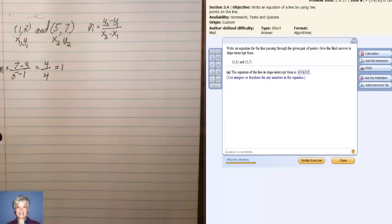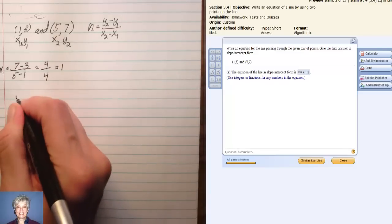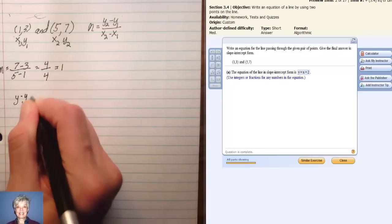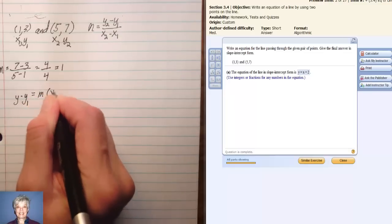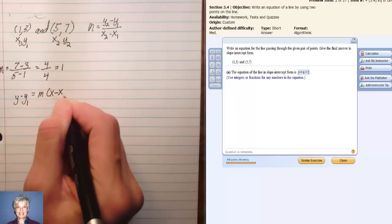Now here comes the new part. There's an equation you're going to be dealing with called the point-slope formula, and here it is: y minus y₁ equals m times the quantity x minus x₁.